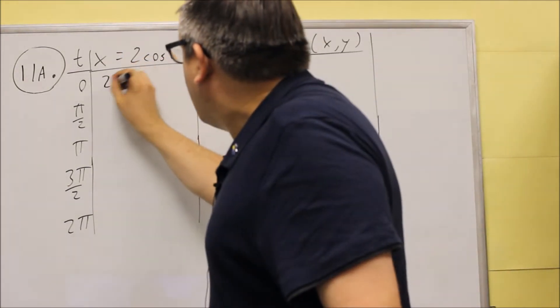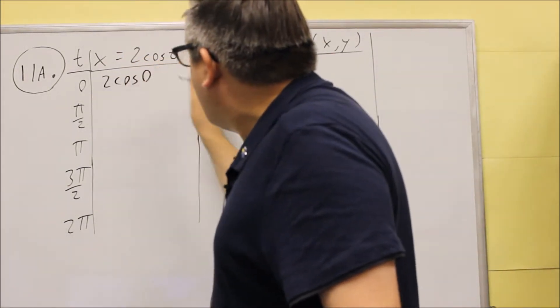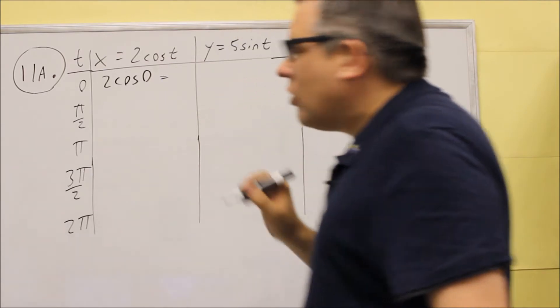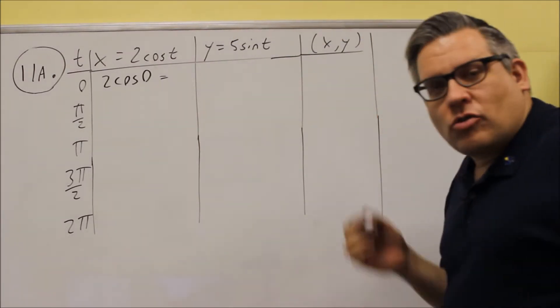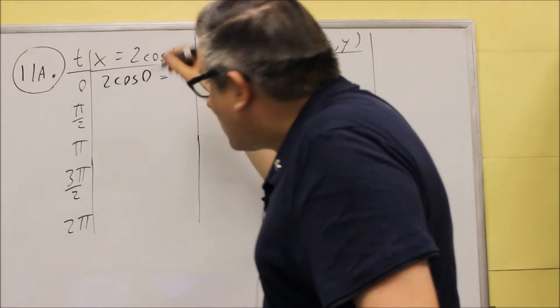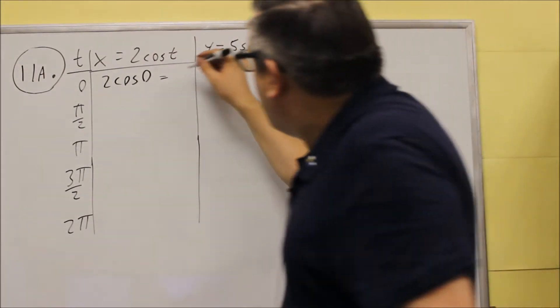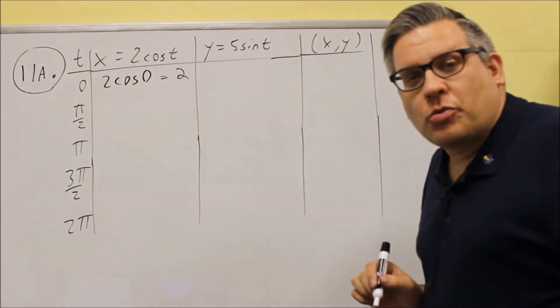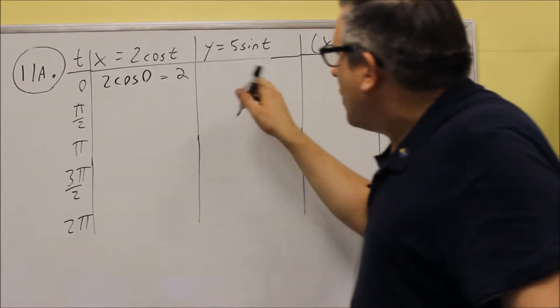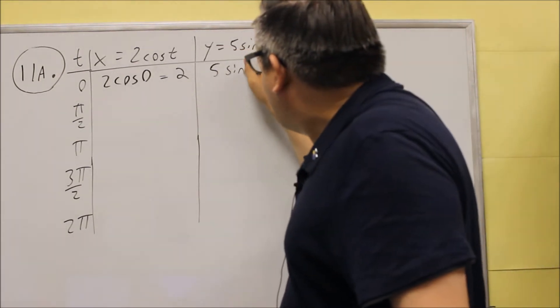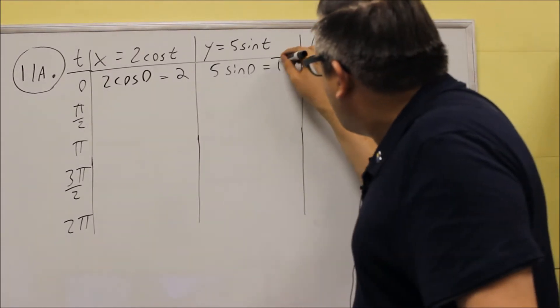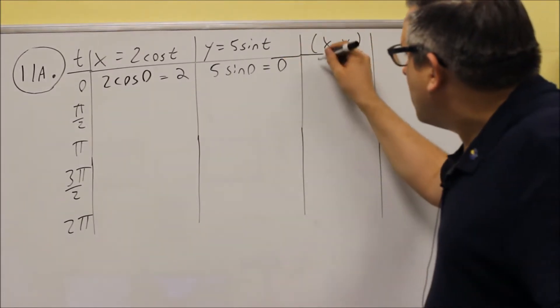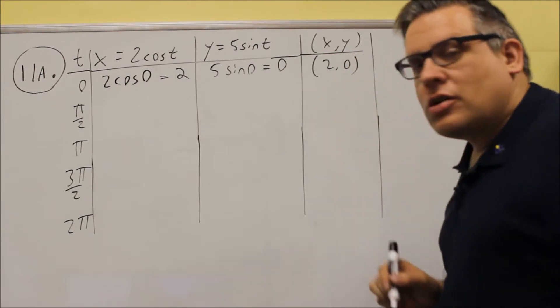You put a zero in here, you're going to get two cosine of zero, and you can get cosine zero from the unit circle. Cosine of zero would be the x value at zero degrees, that's one, and so you get two times one, which is two. For this next one, you have five times sine of zero. Sine of zero is zero, and so five times zero is zero, which means that your first coordinate should be two comma zero.